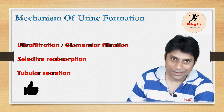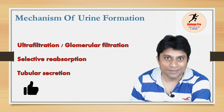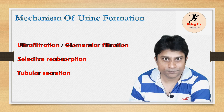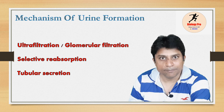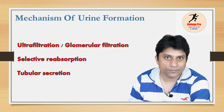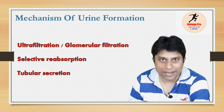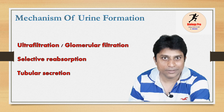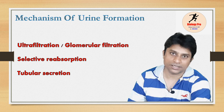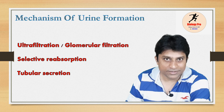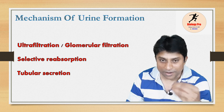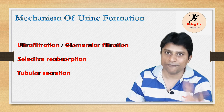Hello students, we have come with another important lecture on the mechanism of urine formation. In the mechanism of urine formation, there are three events: one is called ultrafiltration or glomerular filtration, the second is selective reabsorption, and the third is tubular secretion. The entire mechanism occurs inside the functional units of the kidneys — nephrons.